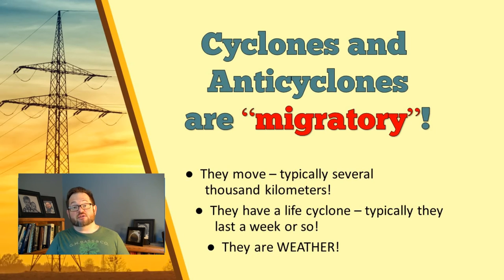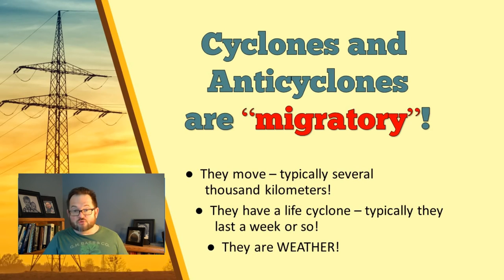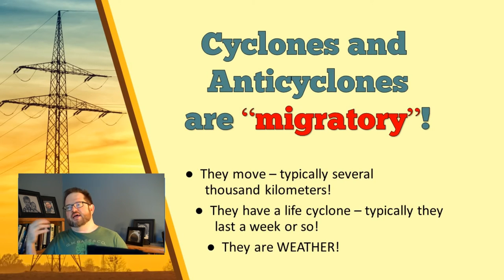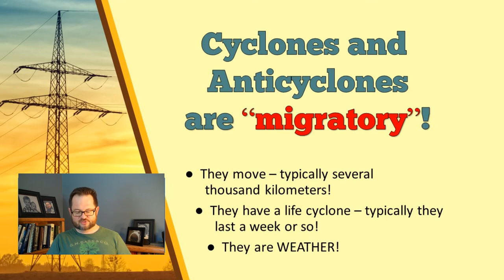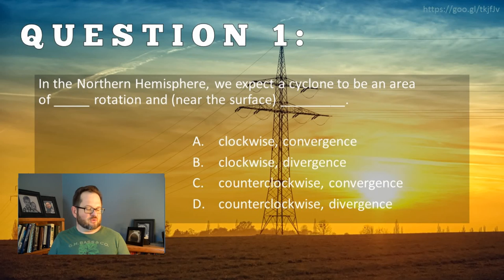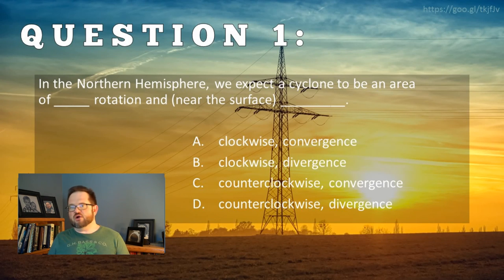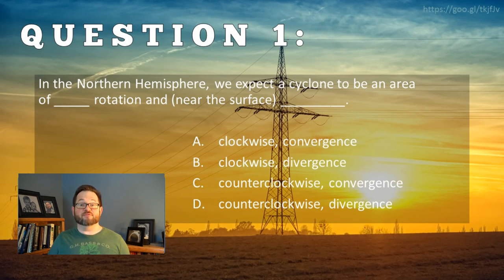As I've said, the cyclones and anticyclones we're learning about are all migratory features. They go through a life cycle, they move, and they'll travel probably a few thousand kilometers over their lifetime of maybe a week or so. They are weather. When you watch the weather and they tell you tomorrow there's going to be a change — it'll get colder and there's a chance of light rain, but by later this week it'll warm up — that's what they're talking about: the passage of cyclones and anticyclones. I wish I could tell you more, but we only have about 20 minutes or so. Let's answer a couple questions before we move on to part two. In the Northern Hemisphere, we expect a cyclone to be an area of blank rotation and, near the surface, blank — clockwise or counterclockwise rotation, convergence or divergence near the surface.